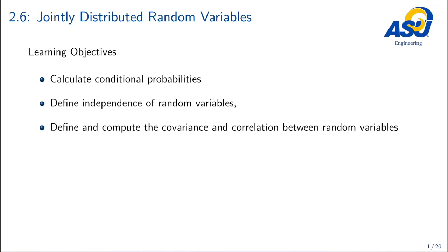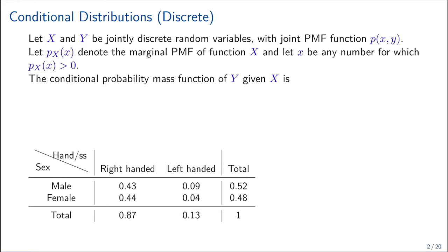Section 2.6: Jointly Distributed Random Variables. The objectives of this video are to calculate conditional probabilities, define dependence of random variables, and define and compute the covariance and correlation between random variables.